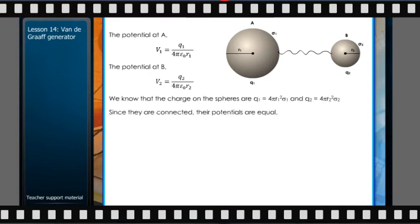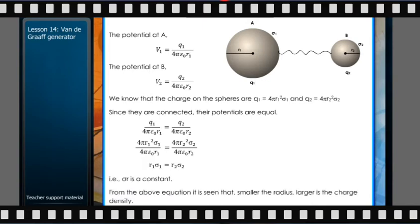Since they are connected, their potentials are equal. So Q1/(4πε₀R1) = Q2/(4πε₀R2). Hence, we get R1σ1 = R2σ2. That is, σr is a constant.